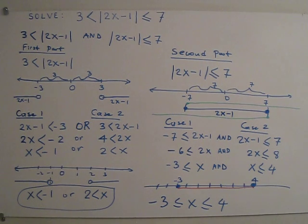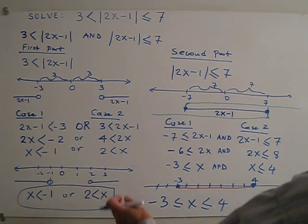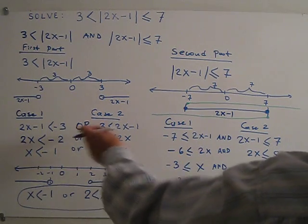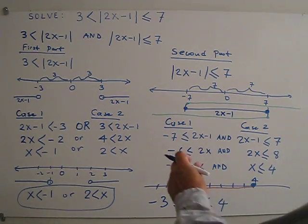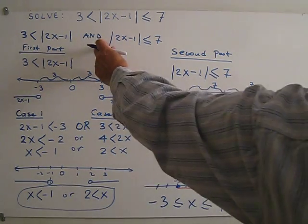To find the final answer, we should combine part 1 and part 2. These are joined by 'and', so we need the intersection.